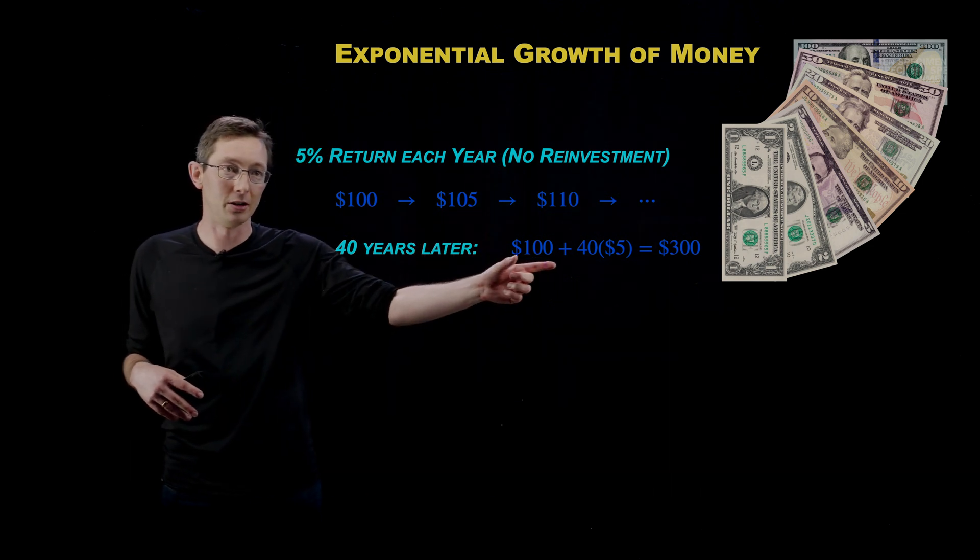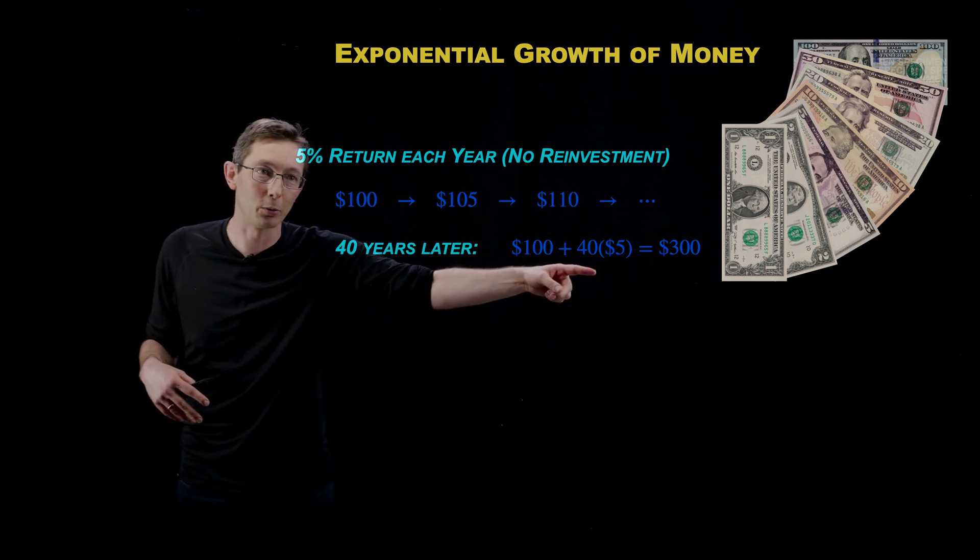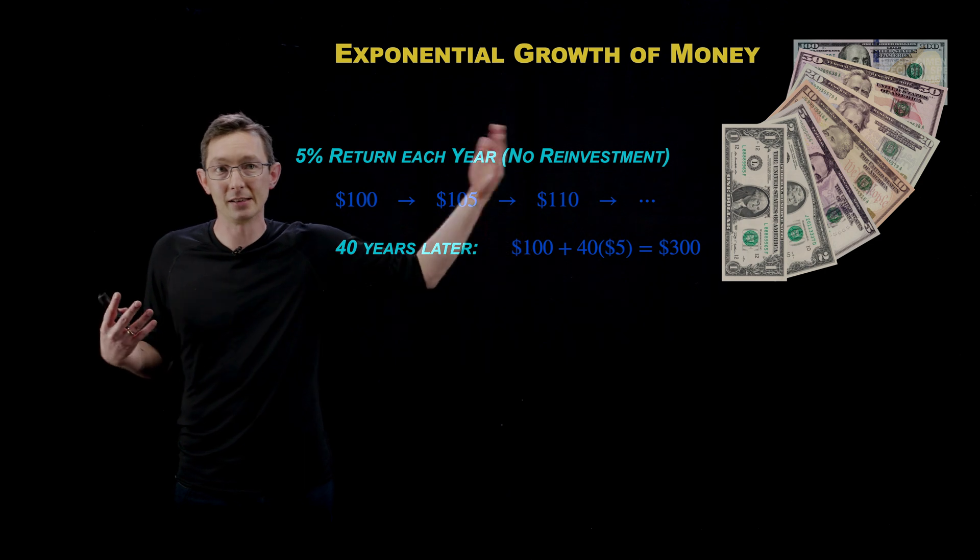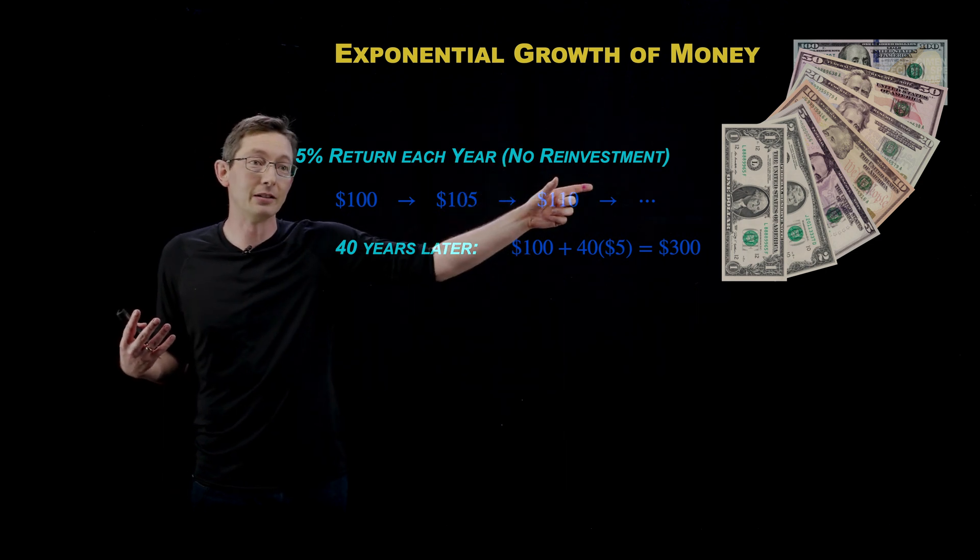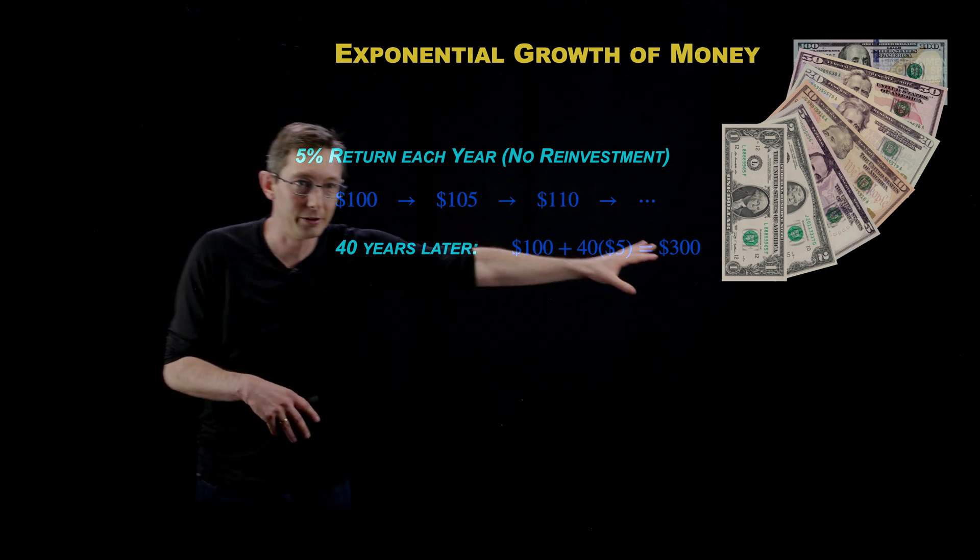You have your original $100. And then every year for 40 years, you get another $5 because of that interest, but you didn't reinvest that $5. So $300 total.